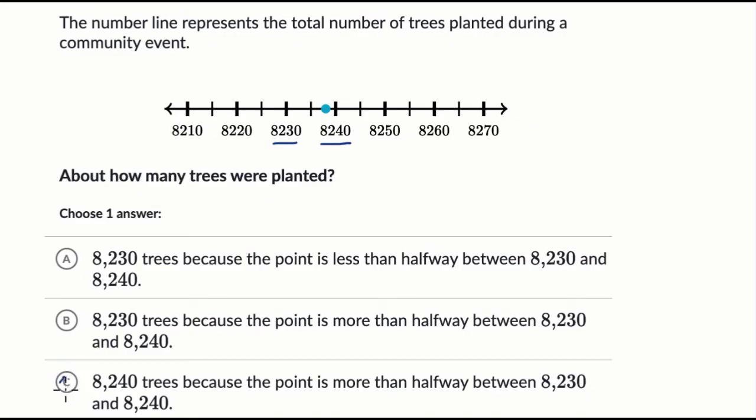And so that's the choice I'm going to go with. And let's see if the rationale or the reason makes sense. 8,240 trees because the point is more than halfway between 8,230 and 8,240. That's exactly what I said.